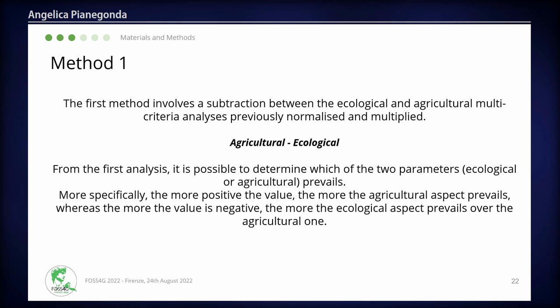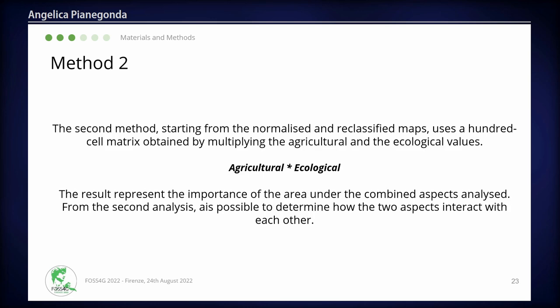The first method consists of the subtraction between the ecological and agricultural criteria analyses, previously normalized and weighted. From this first analysis it is possible to determine which of the two parameters — ecological or agricultural — prevails. More specifically, the more positive the value, the more the agricultural aspect prevails, whereas the more negative the value, the more the ecological aspect prevails over the agricultural one. The second method is similar to the first, but instead of subtracting the values, the agricultural criteria are multiplied by the ecological criteria. The result represents the combined importance of the area under both aspects.